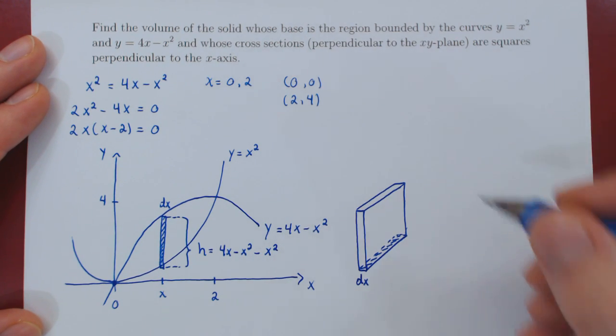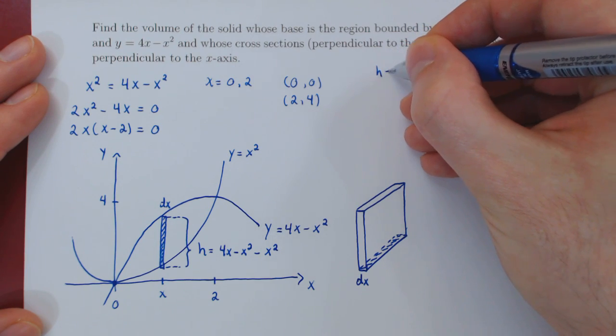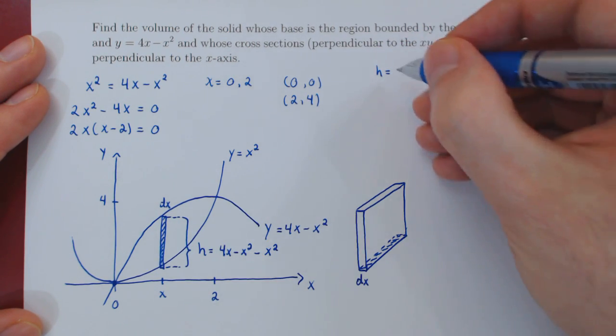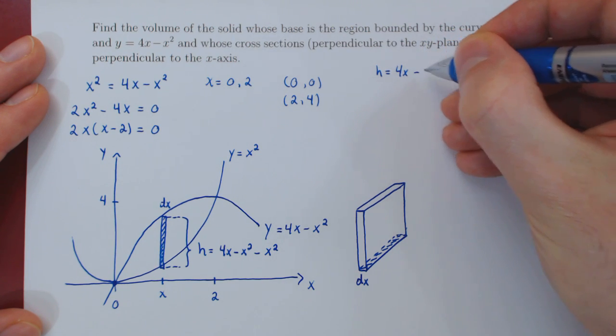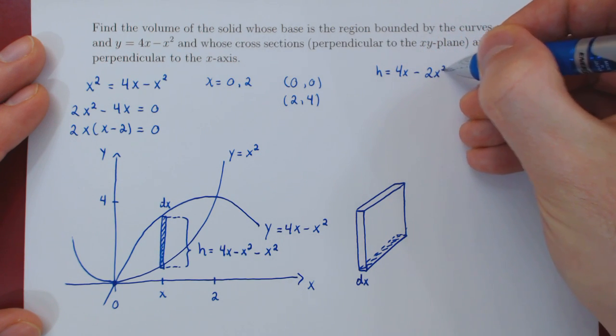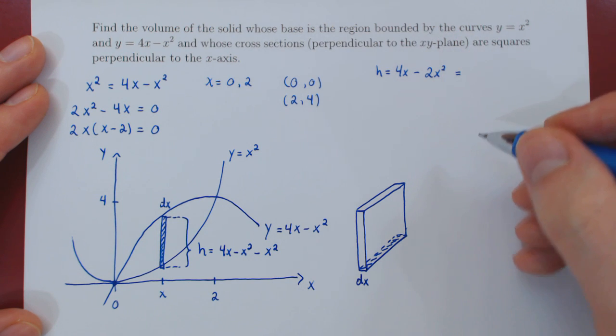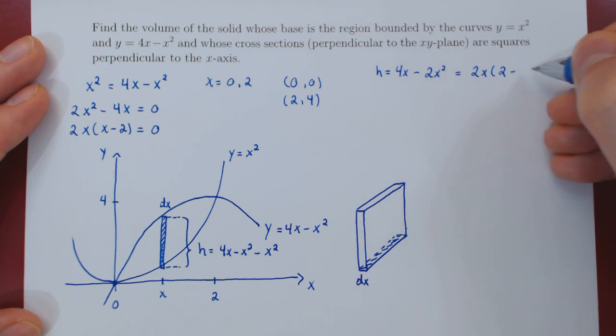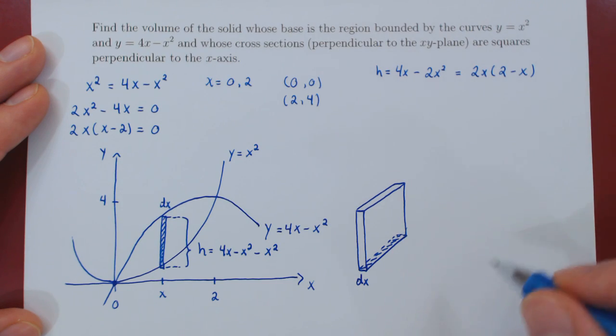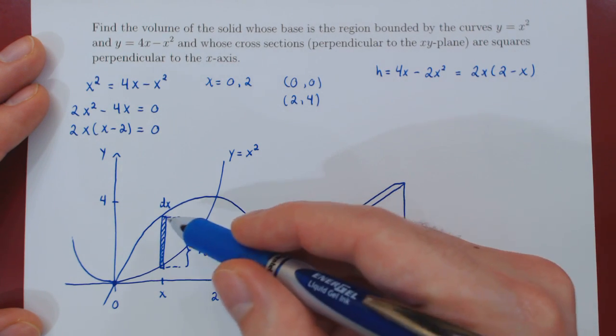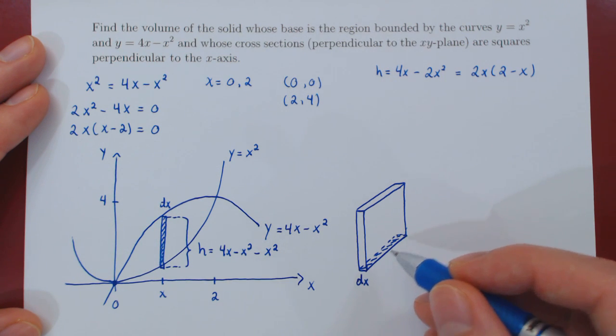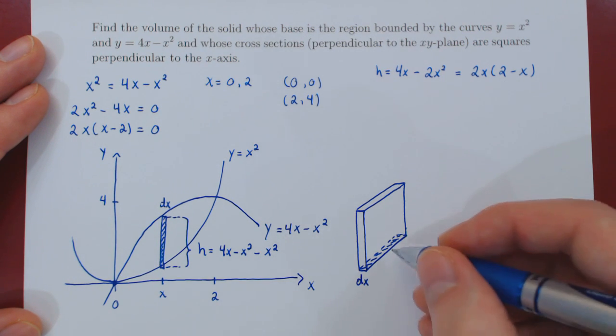Let me simplify this up here. So, the height of our arbitrary infinitesimal vertical rectangle is 4x minus 2x squared. And we can factor from this 2x. And if we do, we are left with 2 minus x. This is the height, the length of our rectangle. Therefore, this is the length of the side of our thin cross section.